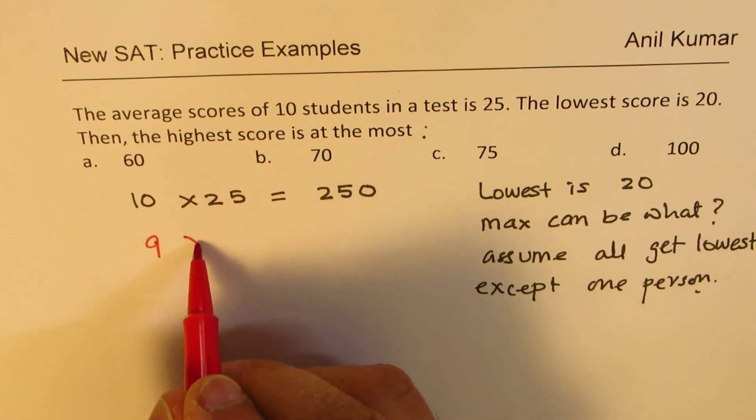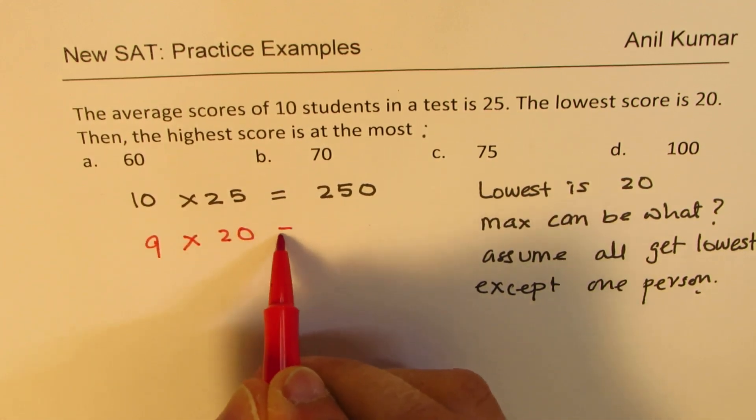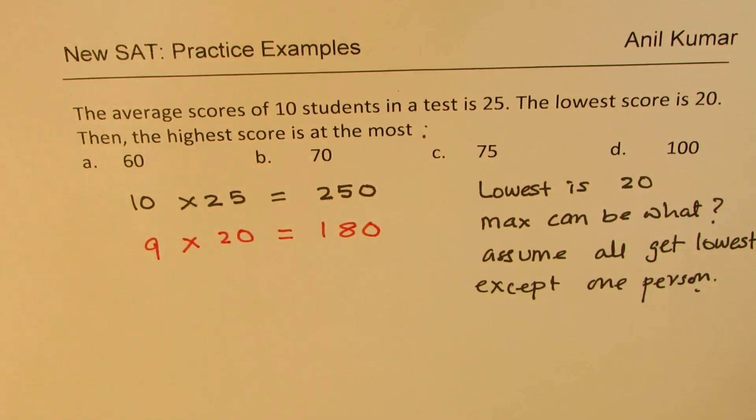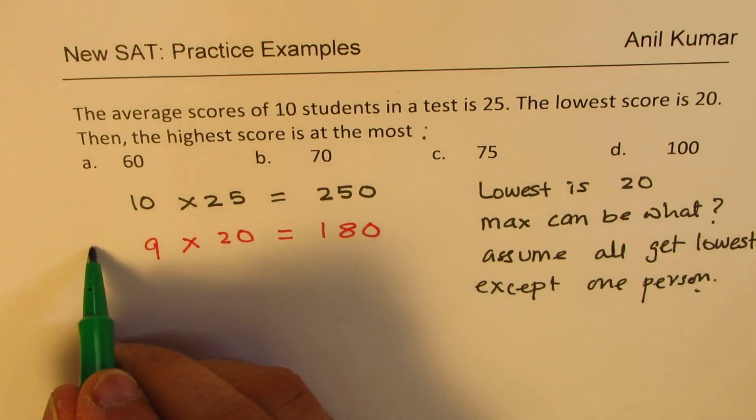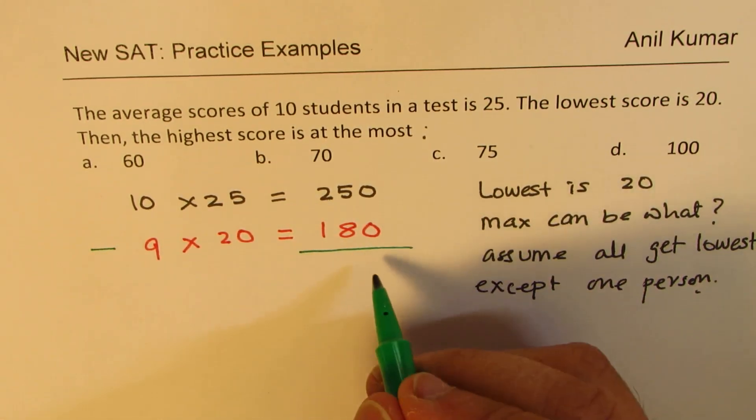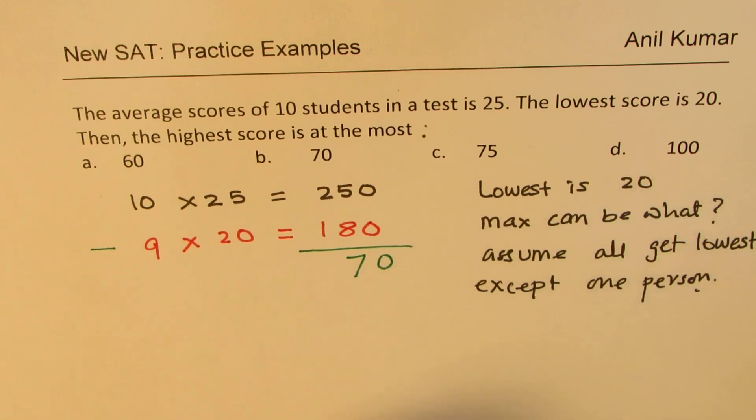So nine students get 20, which means 9 times 20 equals 180. So the 10th person gets the highest. So what is that? You can take away from here and then figure out what it is.